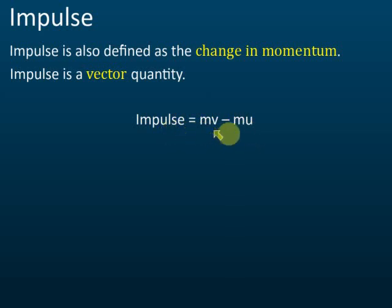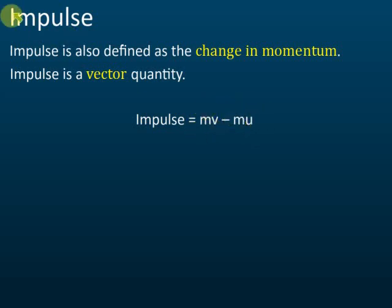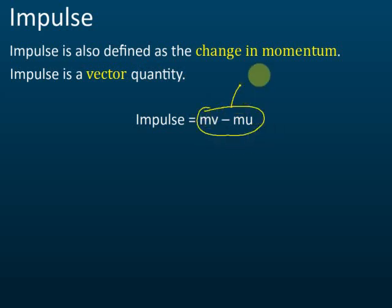Impulse equals mv minus mu, and this mv minus mu is the change in momentum — it's a momentum change.